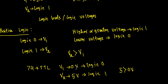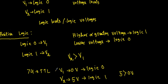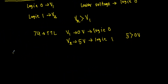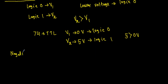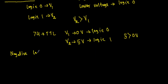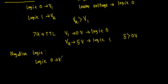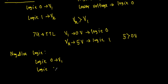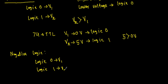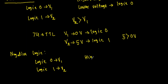Therefore, TTL logic circuits use a positive logic system. Now, what is negative logic? To represent logic zero I will apply a voltage V1, and to represent logic one I will apply a voltage V2. In negative logic, it is the lower voltage that represents logic one, and the higher voltage represents logic zero.